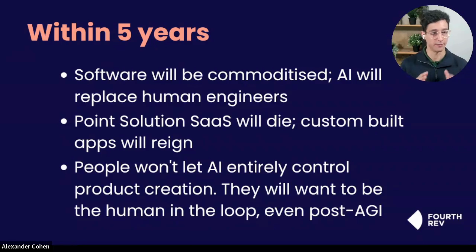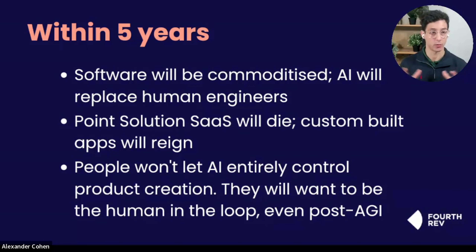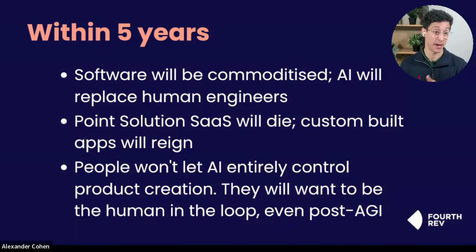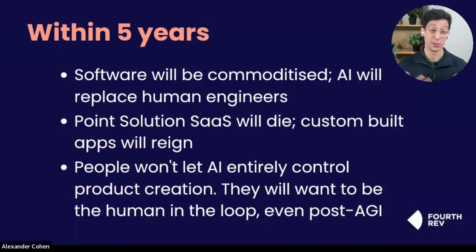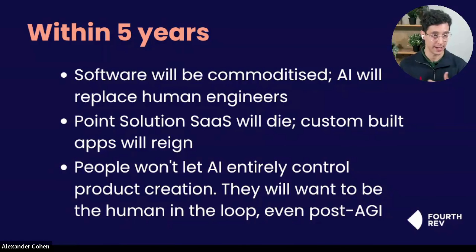It's going to be our role in the future to clearly define what a product should do, taking into account the customer, the ultimate problem you're trying to solve, and making sure you're creating the right solution. When we actually have AI engineers, we're going to see this kind of death of point SaaS solutions. Why would you need a Calendly and pay for a subscription when you can just have an AI build the exact same thing for you? As such, we're going to see an exponential increase in the amount of custom apps that will be built, which is great for us as product managers because those products are going to need to be managed.